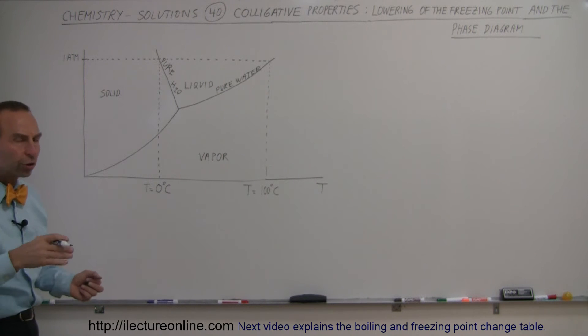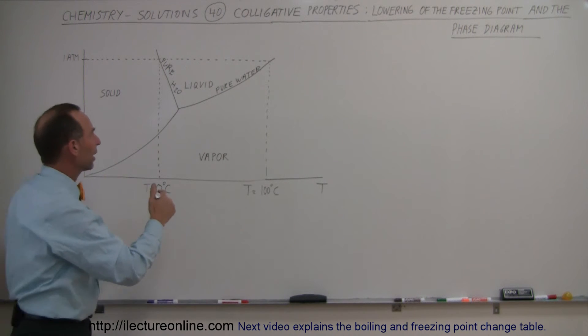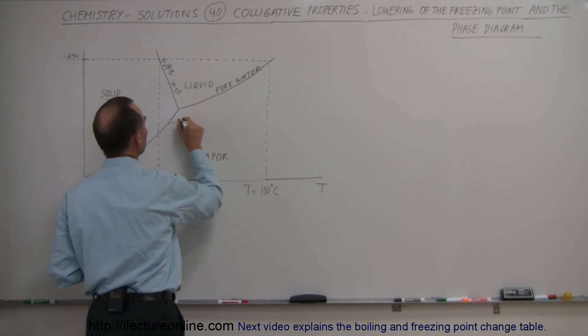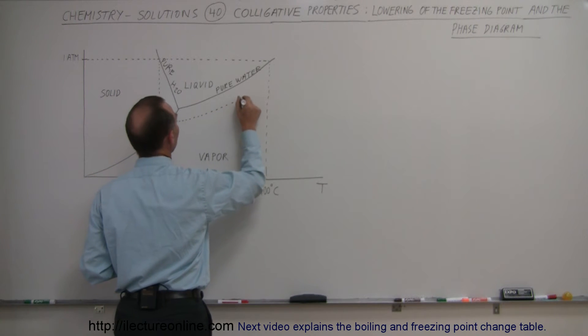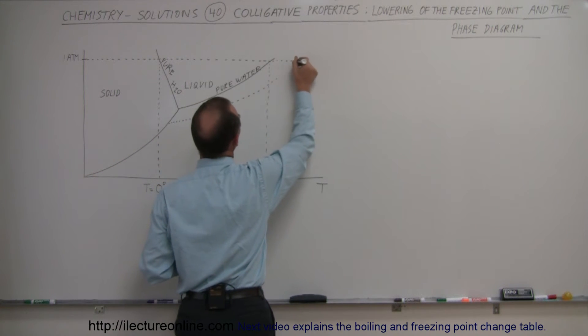Now what happens when we add a solute to it? Well, it lowers that boundary. It creates a new boundary down here. Notice what that means is that at a pressure of one atmosphere, before the water will begin to boil, you will need a higher temperature.